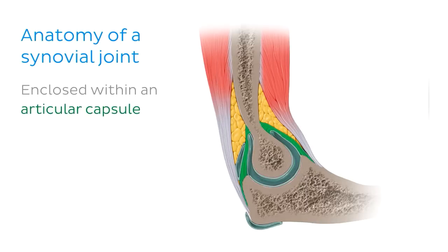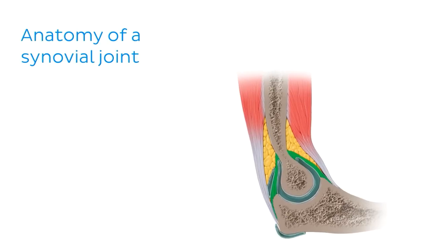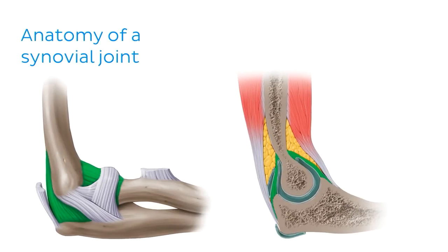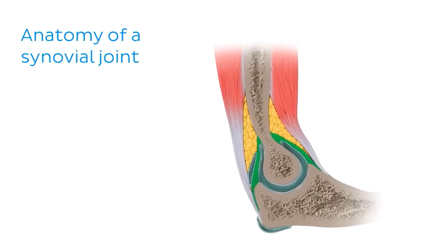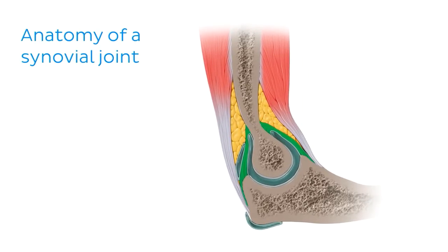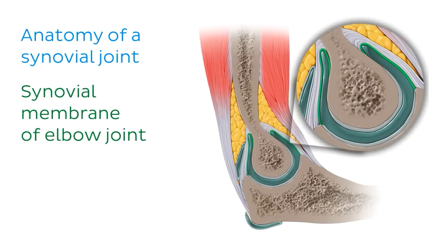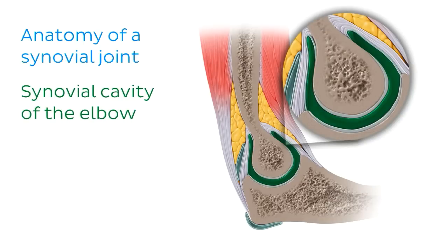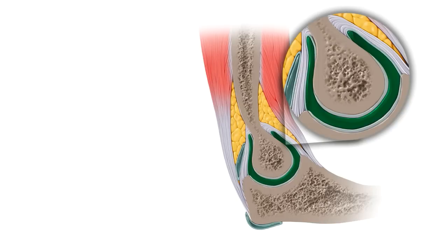The joint is enclosed within an articular capsule, highlighted in green on screen. From an external view, the articular capsule is made up of fibrous connective tissue and provides strength and stability for the joint. On the deep side of the articular capsule is the synovial membrane, which lines the capsule and helps form the synovial cavity — very characteristic of synovial joints. This cavity is filled with synovial fluid, secreted by the synovial membrane to keep the articular surfaces lubricated.